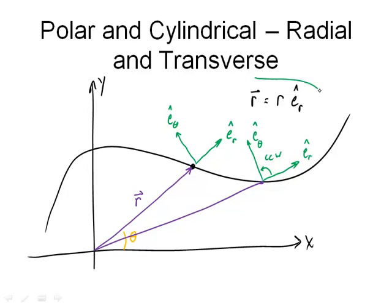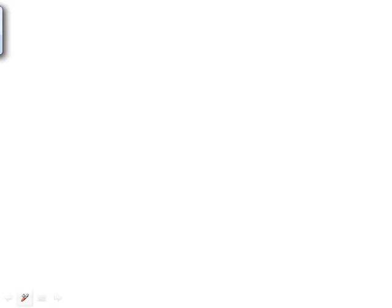So here is the position, r, the distance, times e sub r hat. So how about the velocity, how am I going to find out what the velocity is? Well keep in mind velocity, by definition, is the derivative of r vector with respect to time. So that's the derivative with respect to time of r e sub r hat.